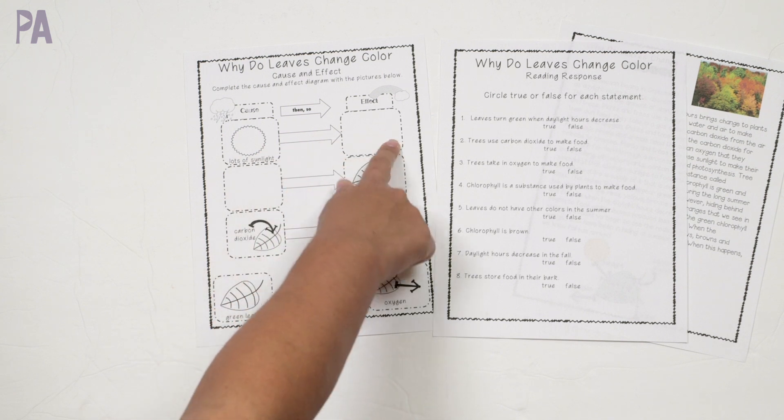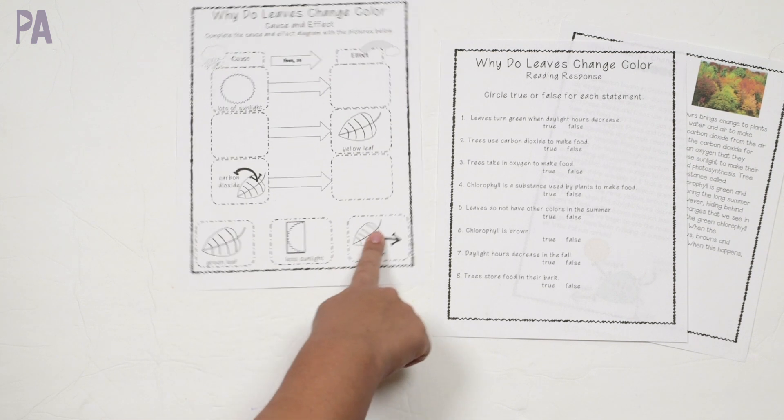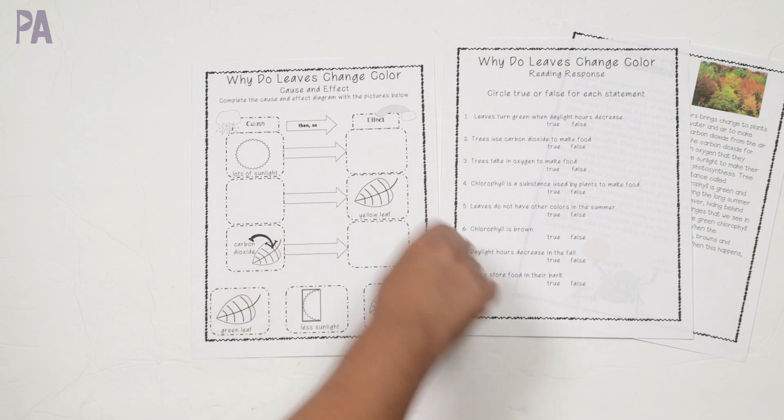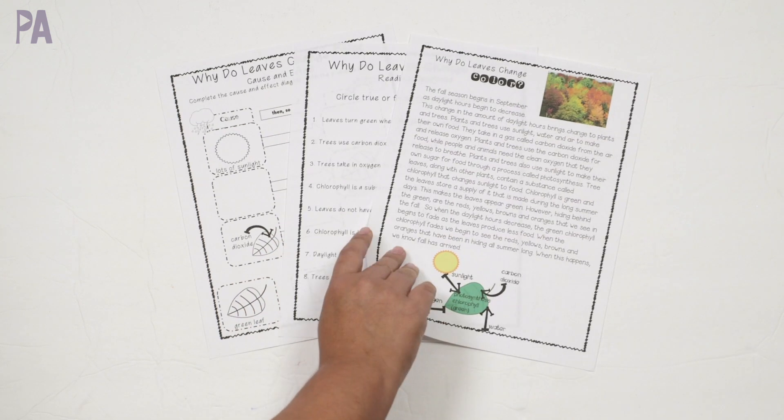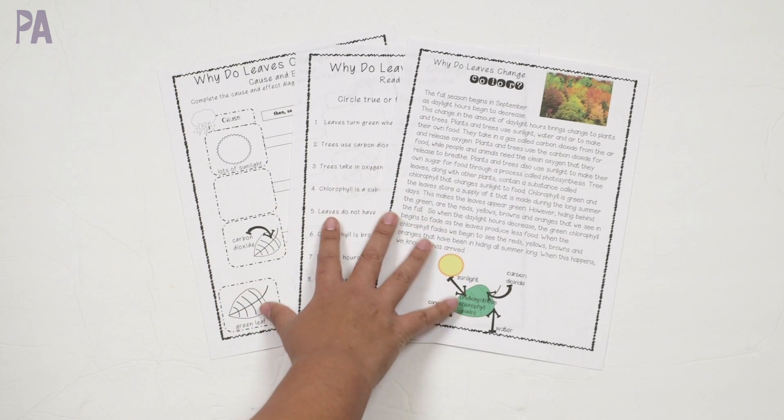So lots of sunlight equals what? And you'd have to choose one of these down here, the green leaf, less sunlight or oxygen to fill out the cause and effect diagram. This is a great investigation of why leaves change color.